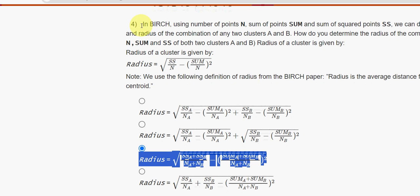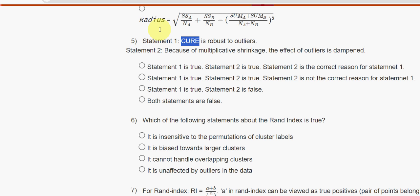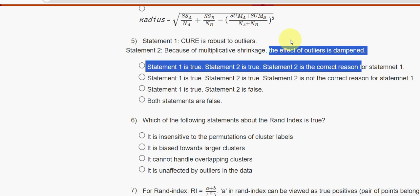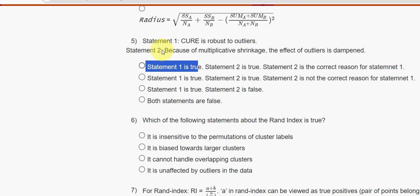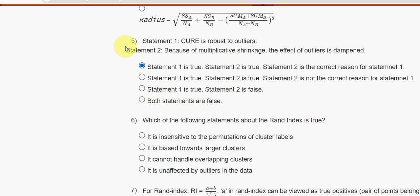Next, fifth question: they have given two statements. Statement one — CURE is robust to outliers. Statement two — because of multiplicative shrinkage, the effect of outliers is dampened. For the fifth question the answer is the first option: statement one is true, statement two is true, and statement two is the correct reason for statement one.